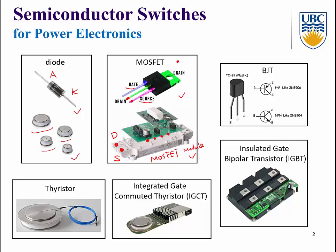We may also have a BJT — bipolar junction transistor. BJT is a three-terminal device with emitter, collector, and base. To turn on the BJT, we need to supply a positive base current to make the VBE PN junction forward biased. To turn off an NPN-type BJT, we need to apply a negative base-to-emitter voltage to make this PN junction reverse biased, or equivalently, supply a negative base current.